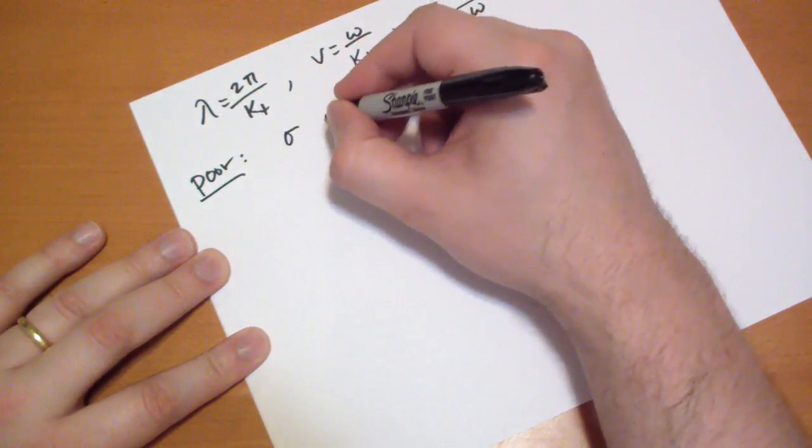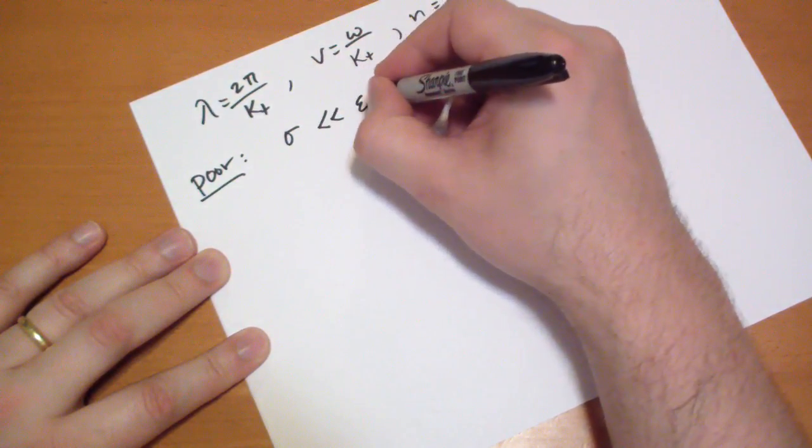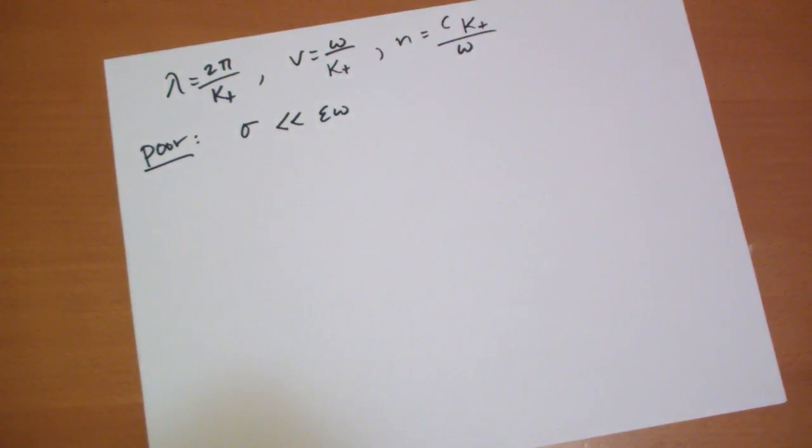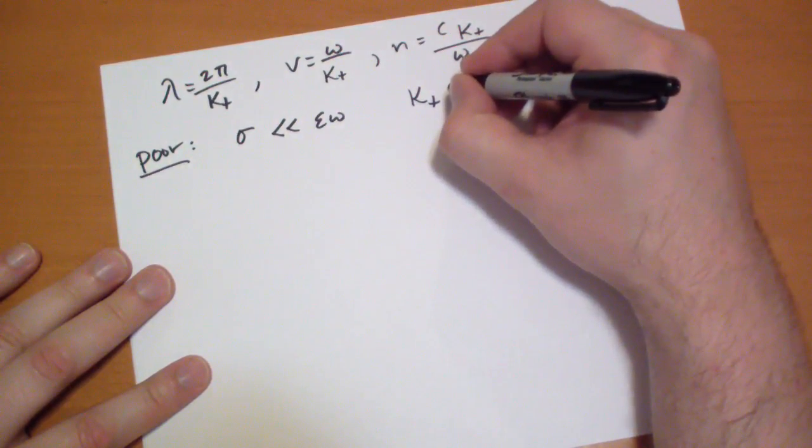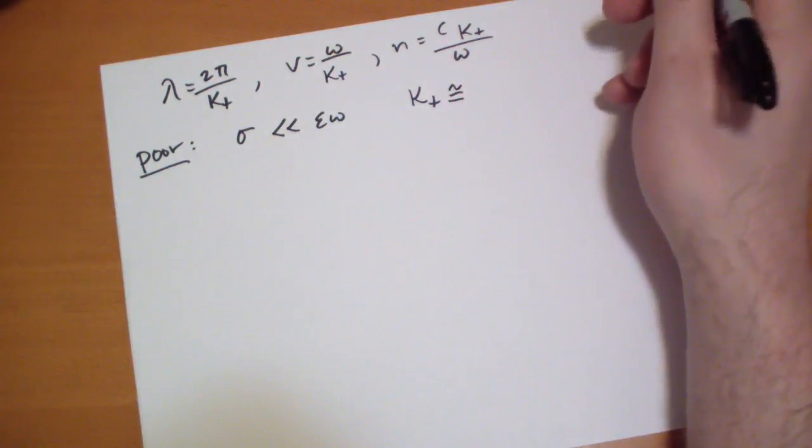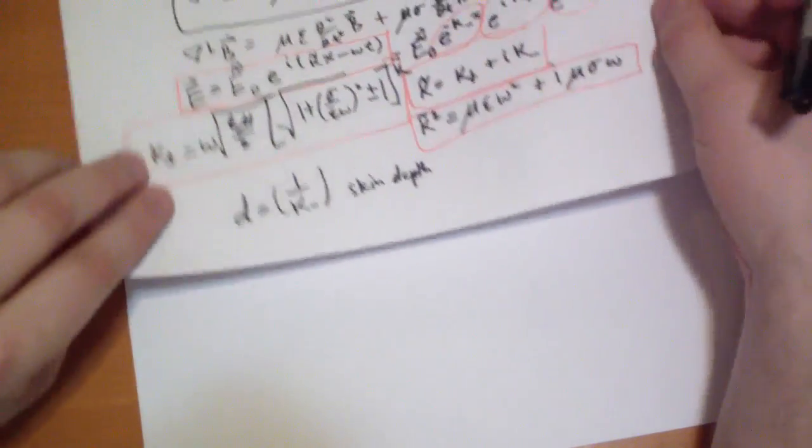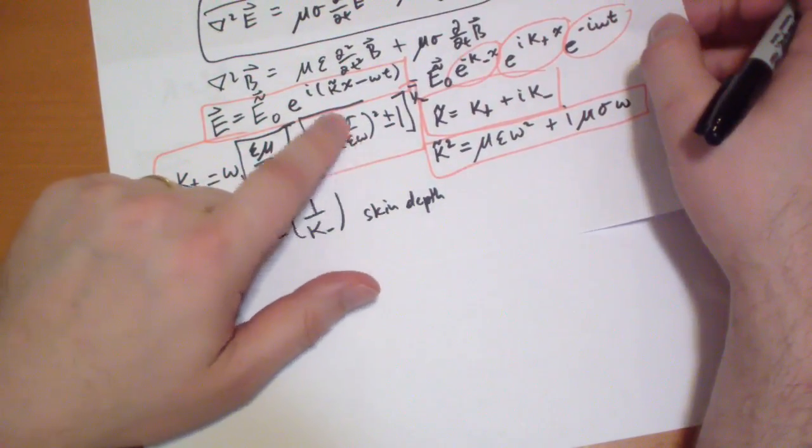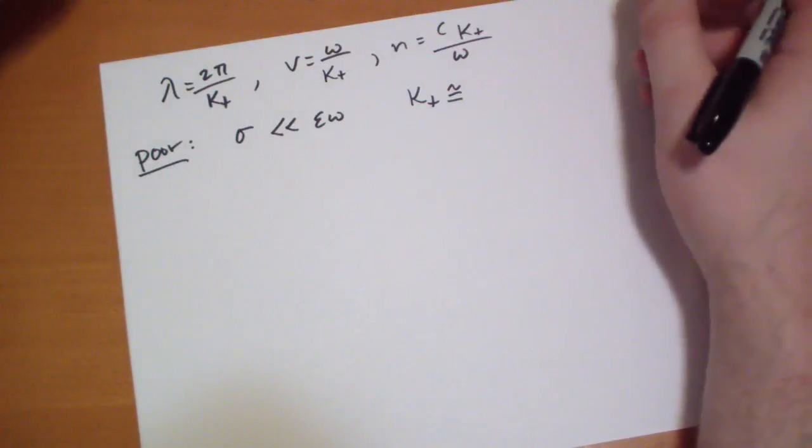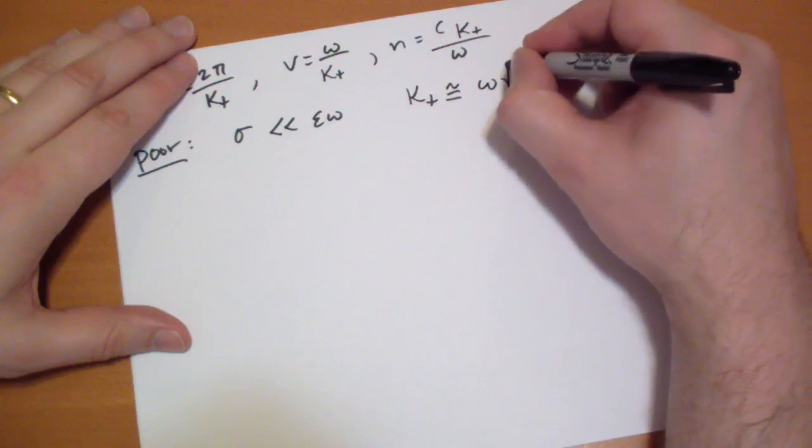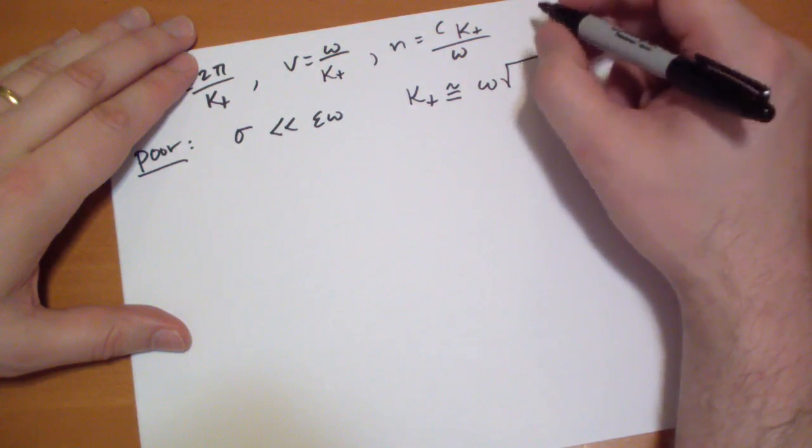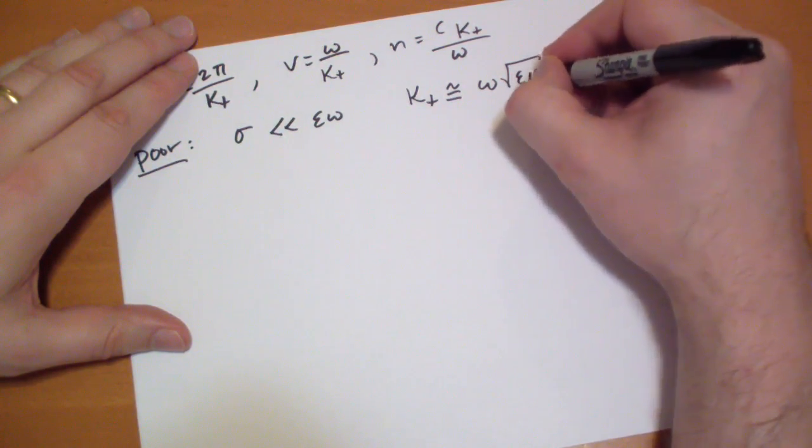where sigma is much less than epsilon omega okay so it's a small value in this case our kappa is roughly equal to if we stick it in here and take a look right so this term is very small we can simplify that to just omega times the square root of epsilon mu okay.